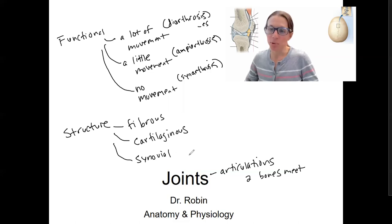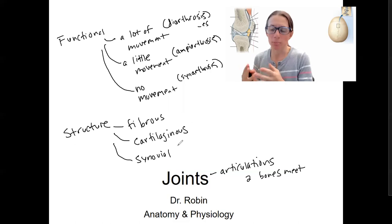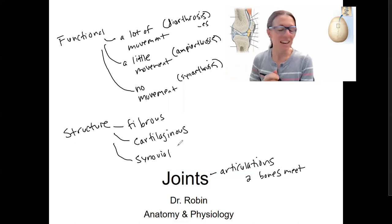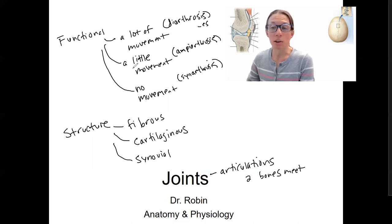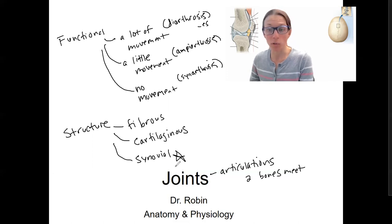Synovial joints are going to be highly mobile — they're always diarthrosis. They're called synovial because they have a synovial membrane capsule and more complex anatomy that we'll talk about. This week we'll start by talking through each of these, then relating structure to function, and then we'll talk most about synovial joints. We'll come back to this in lab and see lots of examples of synovial joints.